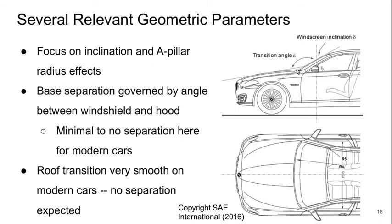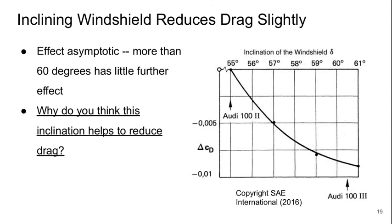The separation at the base of the windshield is governed by the angle between the windshield and the hood. Most modern cars have little to no separation here, and the roof transition is very smooth as well, so we won't expect separation there either. But if we look at just the effect of inclining the windshield, we can see that we can reduce the drag slightly by inclining it further back — going to around 60 degrees or so gives a small reduction, and past that there's not much more benefit.